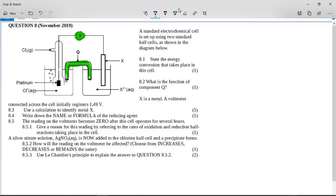It says a standard electrochemical cell is set up using two standard half cells. State the energy conversion that takes place in the cell. Well, this cell, being that it's a galvanic cell, is converting chemical energy into electrical energy.